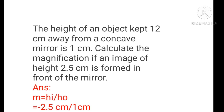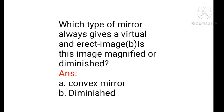The height of an object kept 12 cm away from a concave mirror is 1 cm. Calculate the magnification if an image of height 2.5 cm is formed in front of the mirror. Apply the magnification formula: m equals minus 2.5 divided by 1, giving a magnification of minus 2.5.